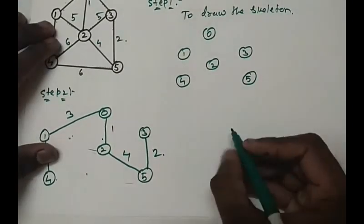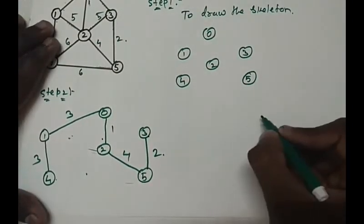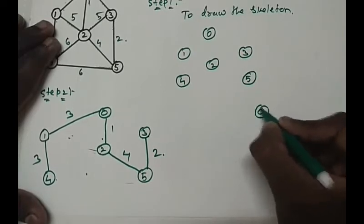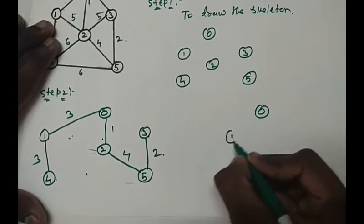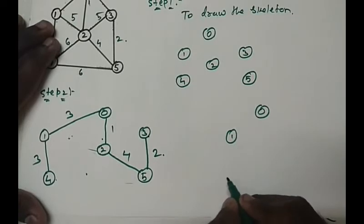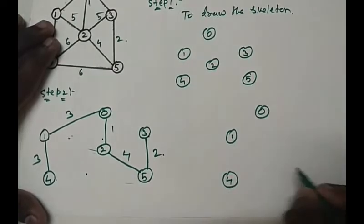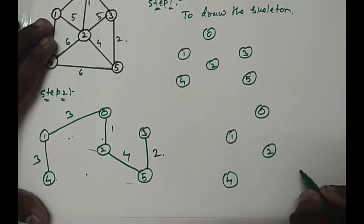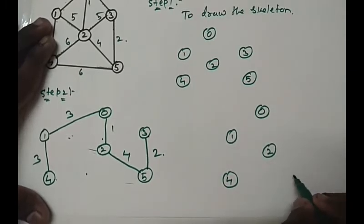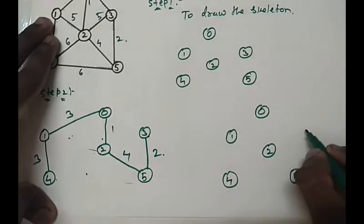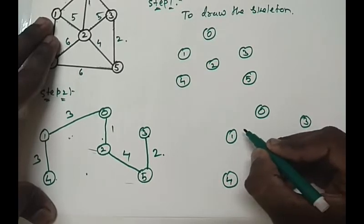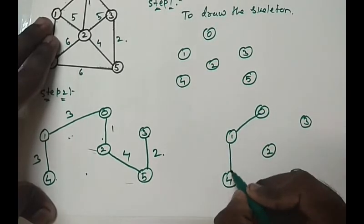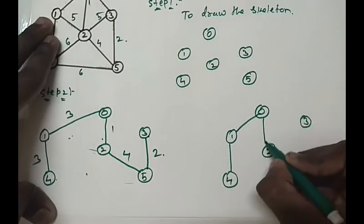So the final answer is 0 will be at the top, 1 will be at the bottom, sorry 4 will be at the bottom, 2 as center, next one will be 5 and 3.